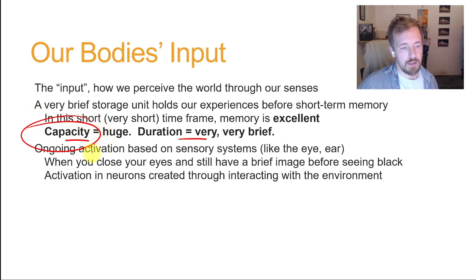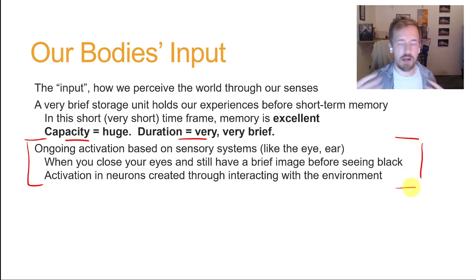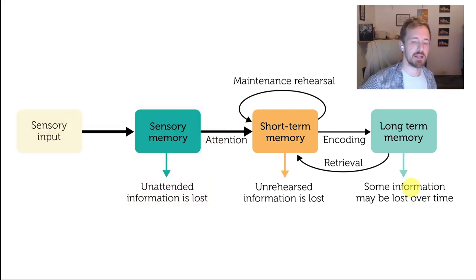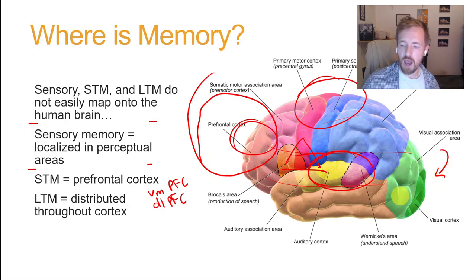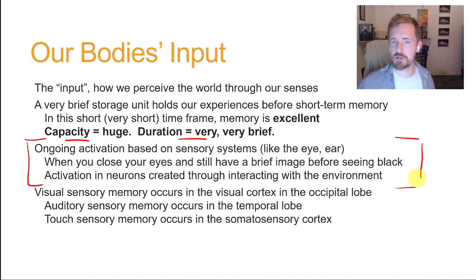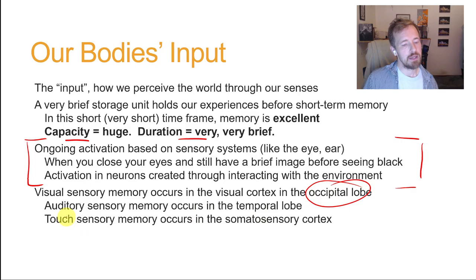What sensory memory really is is the ongoing activation from different parts of your sensory system that have been activated because we are sensing things. That's why areas associated with vision are active during sensory memory — the memory is made up of lingering activation left over from sensing those things. This is why visual sensory memory happens in the visual cortex, auditory memory in the temporal lobe, and touch memory in the somatosensory cortex.